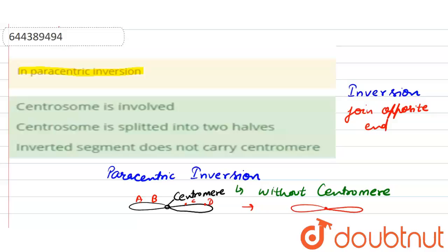a centromere, here A, B, but here D, C. So this one inversion is a paracentric inversion where the inverted segment...